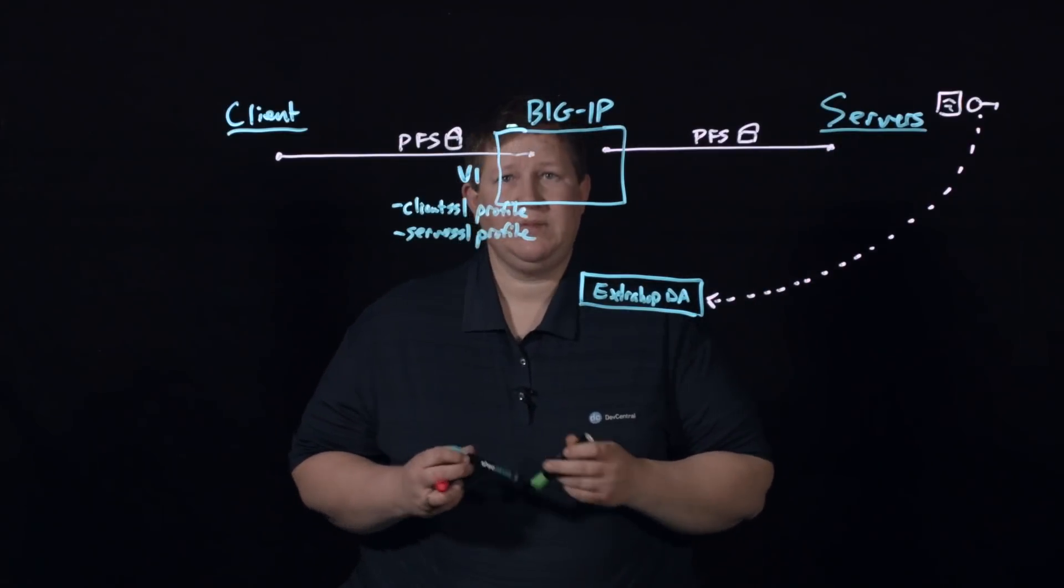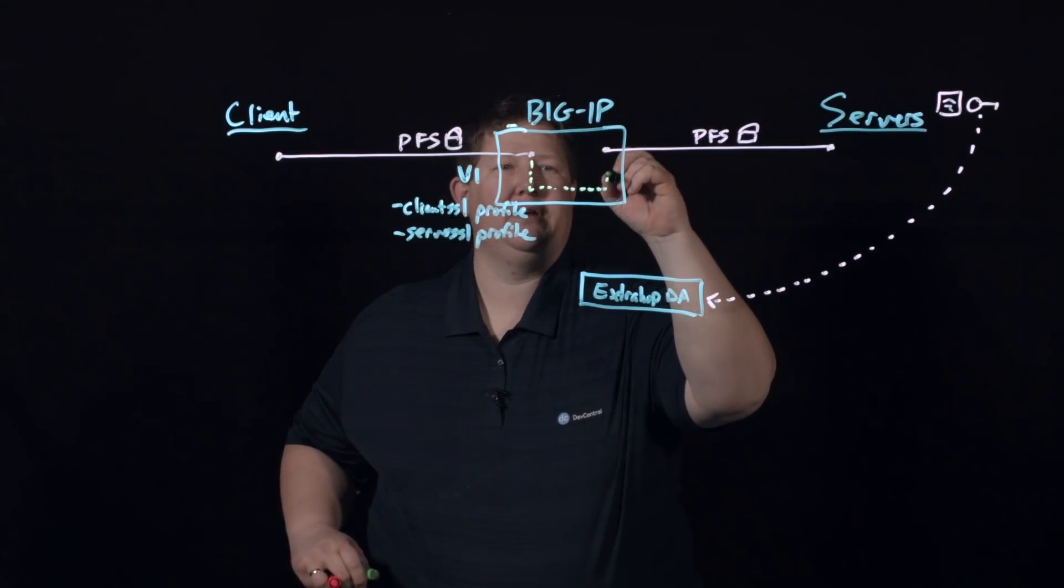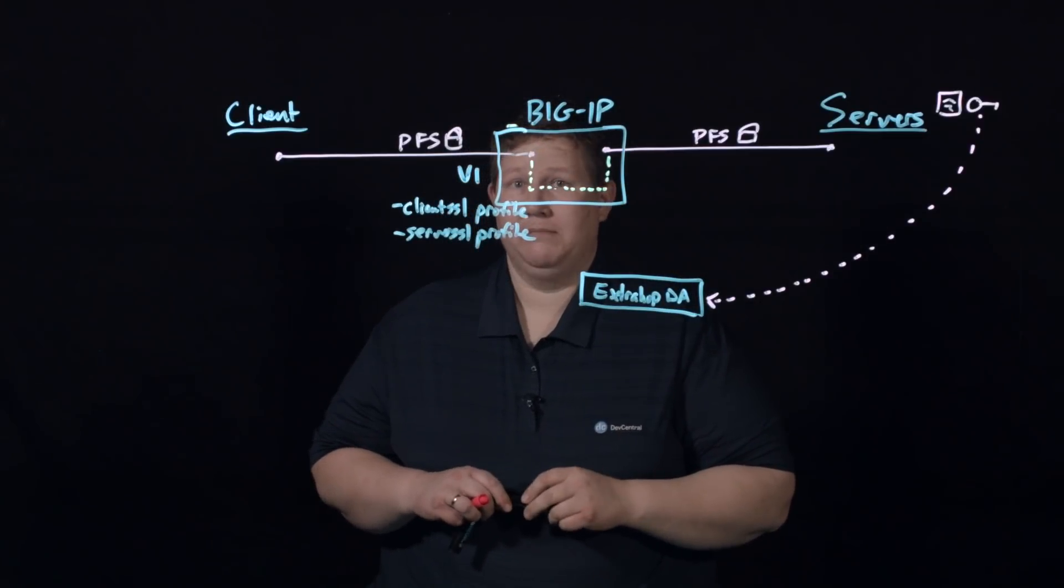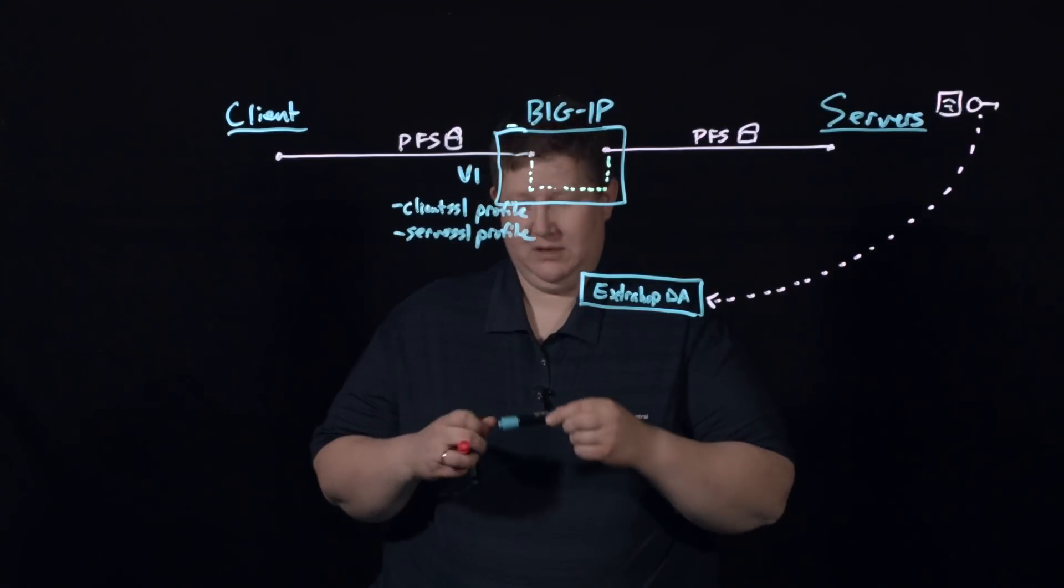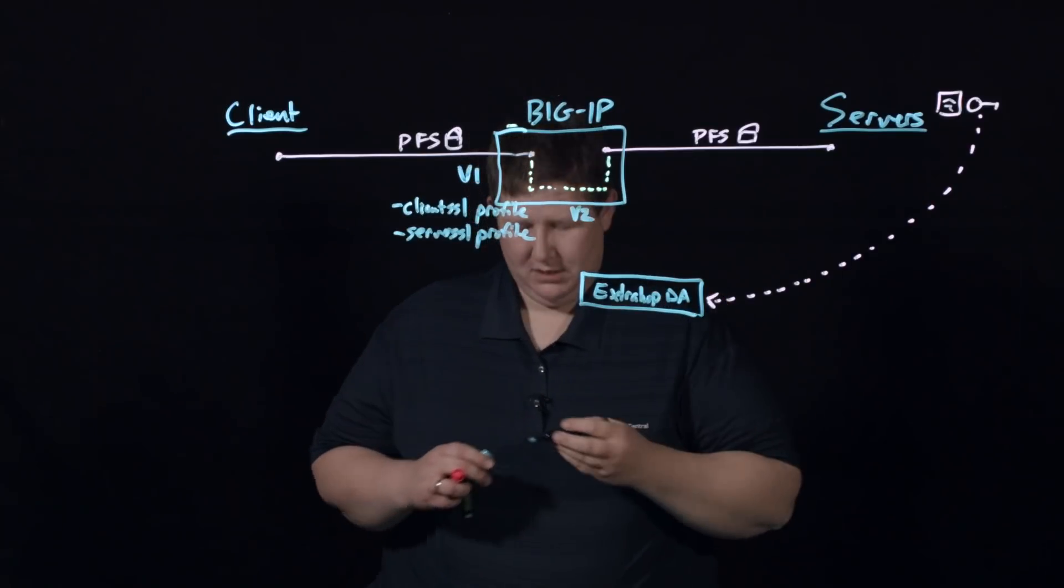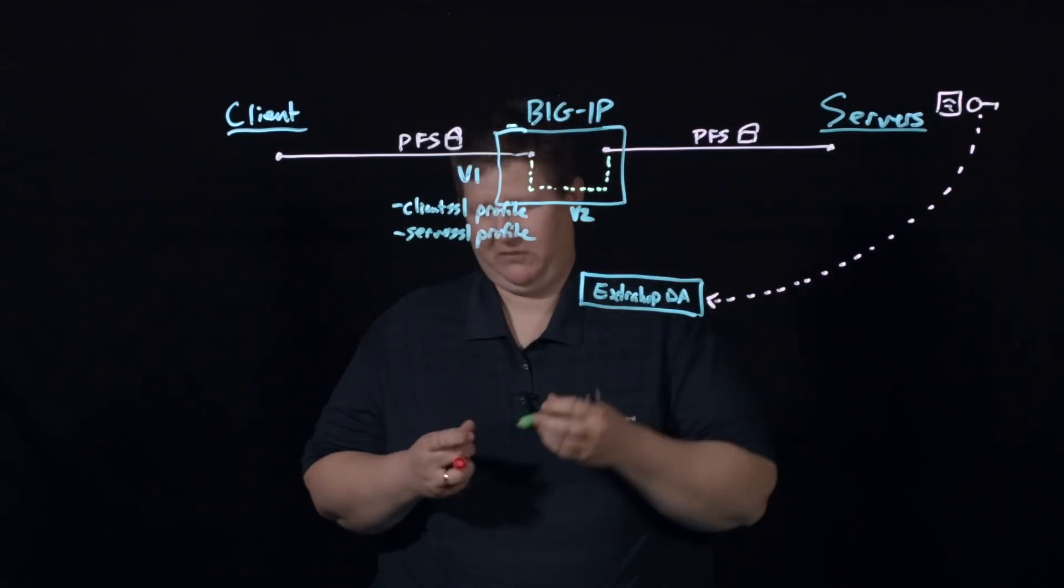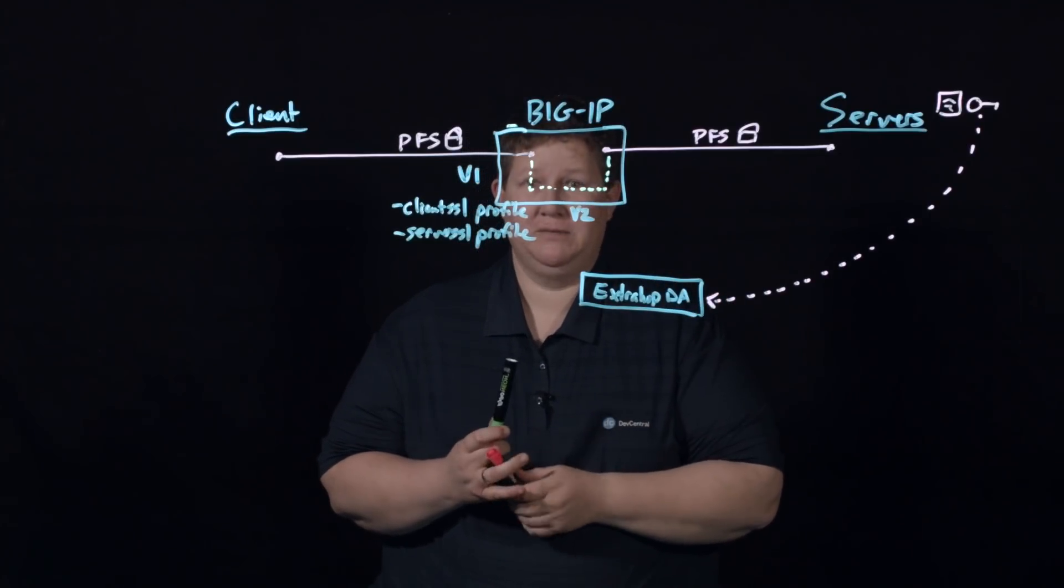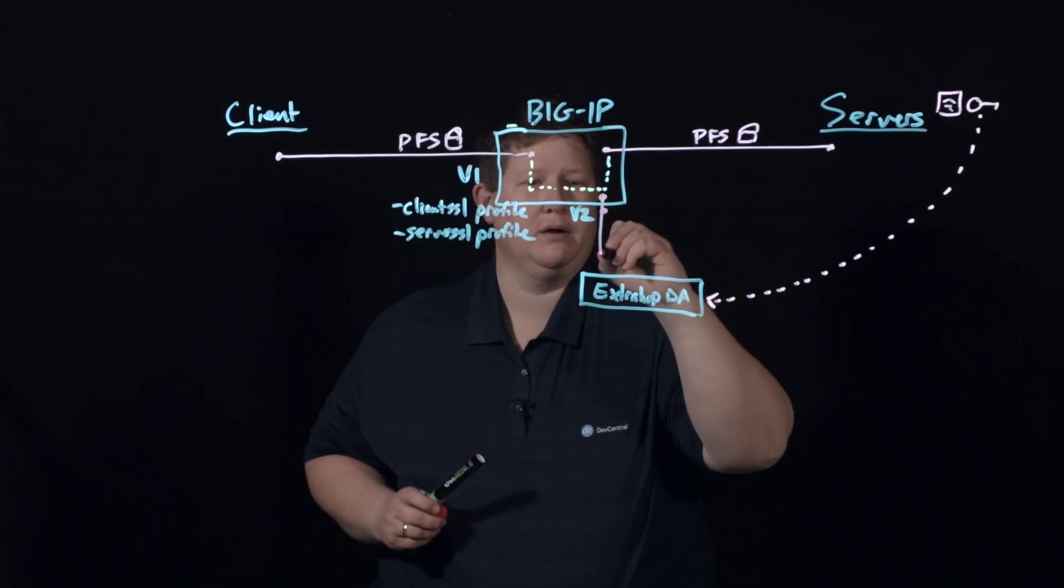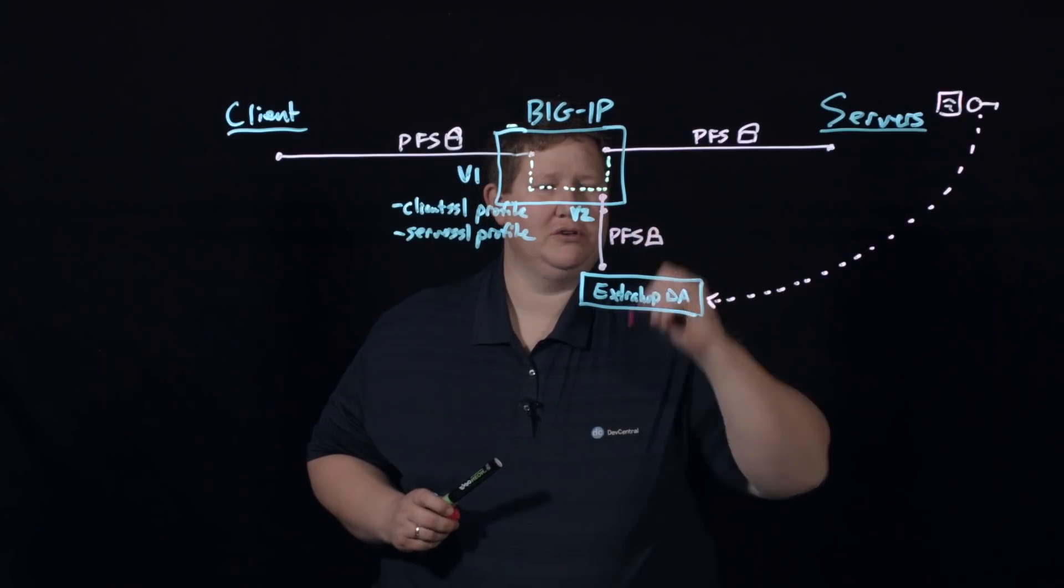And inside here, we have visibility to inspect that traffic in the clear. So if we have an additional virtual server here, which we'll call V2, then we can copy all or some of this traffic and use a sideband connection that we're going to set up here and send to ExtraHop. And we can also create a PFS relationship with ExtraHop.